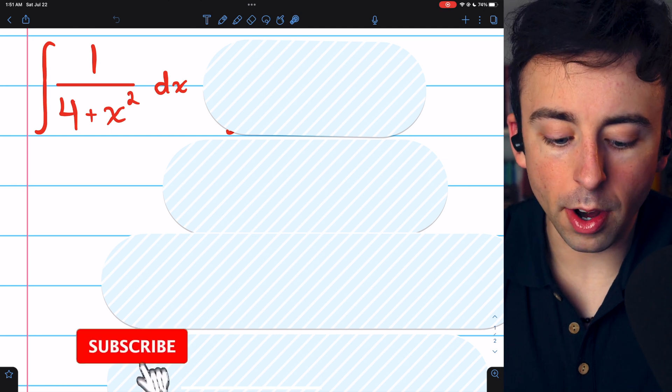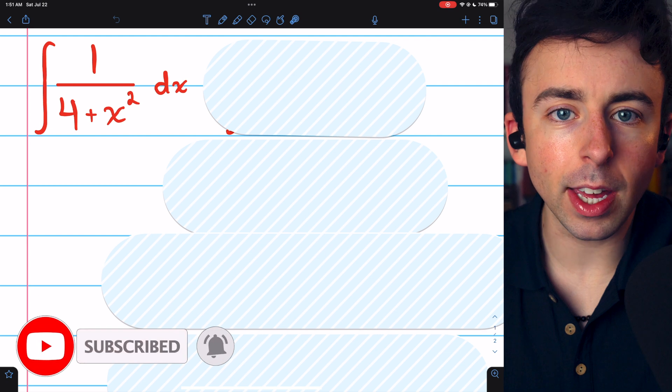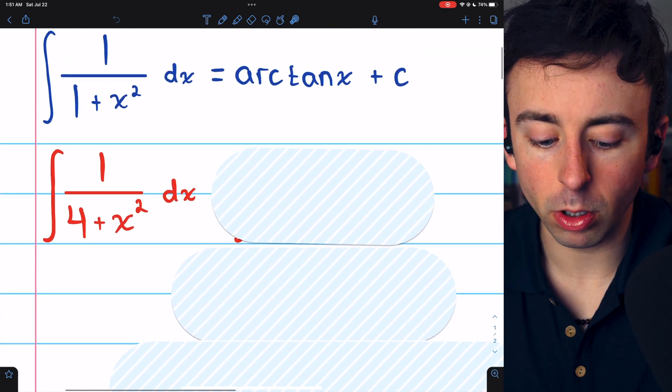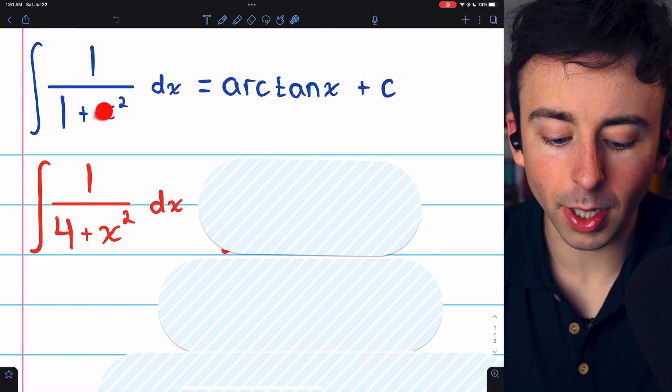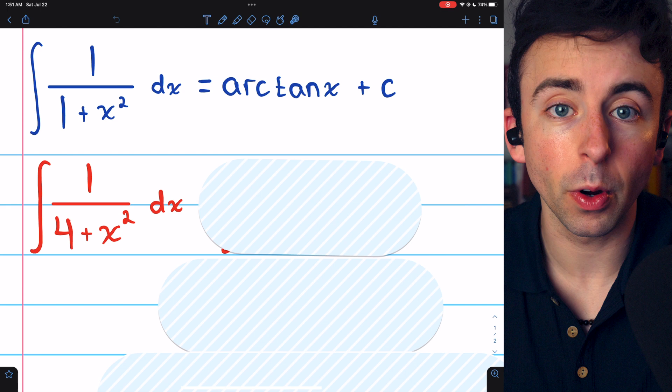When you see the integral of 1 over 4 plus x squared, you should immediately be thinking about the arctangent function. You should recall that the integral of 1 over 1 plus x squared is arctan, plus c, of course.